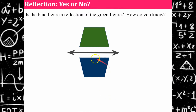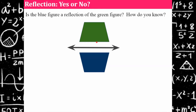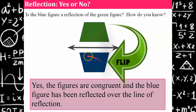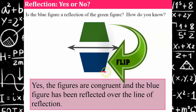Your turn: Is the blue figure a reflection of the green figure, and how do you know? It is indeed — it's been flipped over the line of reflection. The figures are congruent; if you folded on this line, one would be on top of the other. Each vertex is the same distance from the line of reflection as its corresponding vertex, and we can confirm it is a reflection.